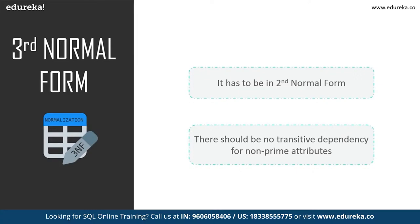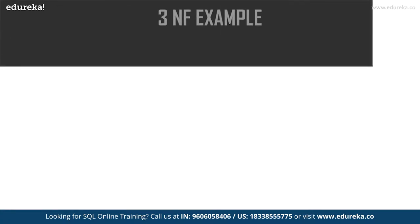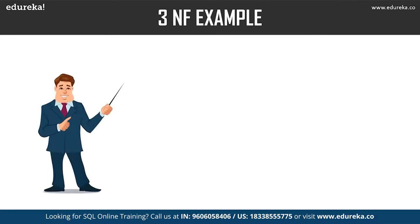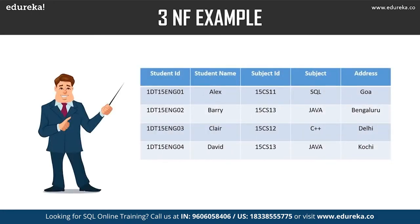All non-prime attributes must depend only on prime attributes. Third normal form was designed to eliminate undesirable data anomalies, reduce the need for restructuring over time, and make the data model more informative. In our example table, student ID determines subject ID and subject ID determines subject — therefore student ID determines subject via subject ID, creating a transitive functional dependency that violates third normal form.